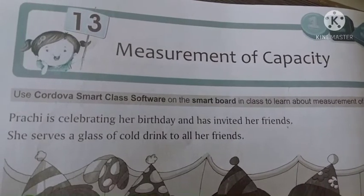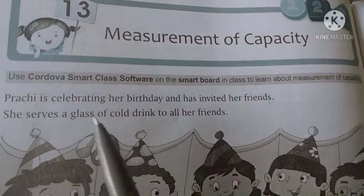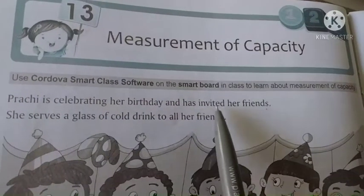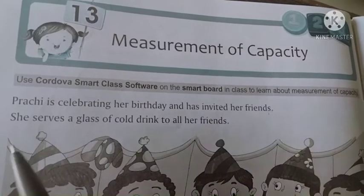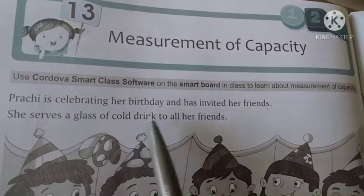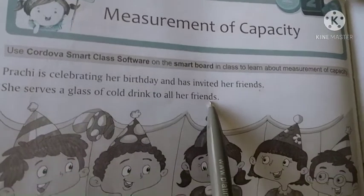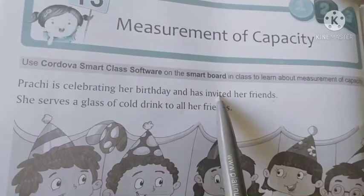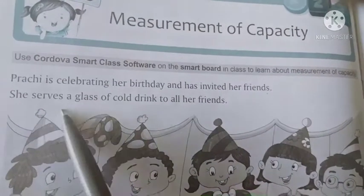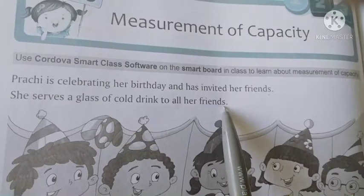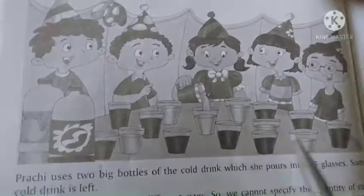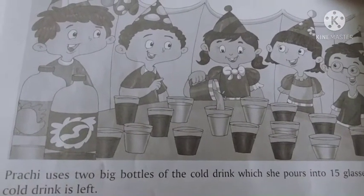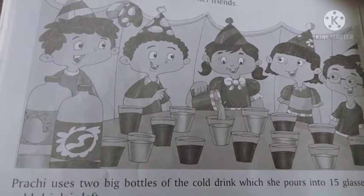This chapter is from textbook page number 130. Prachi is celebrating her birthday and has invited her friends. She serves a glass of cold drink to all the friends. Ki Prachi jo hai, woh apna birthday celebrate kar rahi hai, usne apne sabhi friends ko invite kar rakha hai. Apne saare friends ko cold drink de rahi hai.